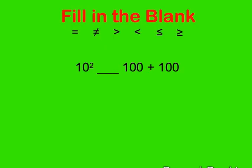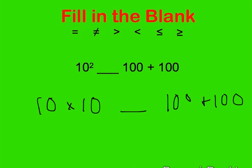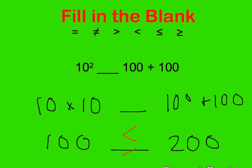Our next problem is a fill-in-the-blank. We're filling in with one or more signs to make the statement true. On the left side we have 10 times 10, and on the right side we have 100 plus 100. That gives us 100 on the left and 200 on the right. Several signs work here: 100 is not equal to 200; 100 is less than 200; 100 is less than or equal to 200; and 200 is greater than or equal to 100.